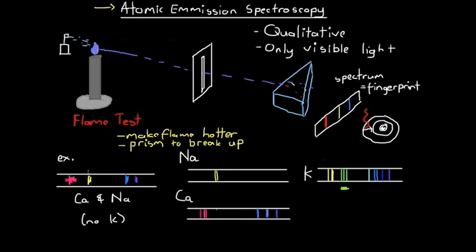That's how we can use combinations of spectral data to analyze a combination of metals, or more simply, analyze individual metals and compare them to known data to see how they match up. Through that, we can identify the metal we've been dealing with quite simply. So that is atomic emission spectroscopy: qualitative analysis that allows us to identify elements based on the visible light released through atom excitation and de-excitation.